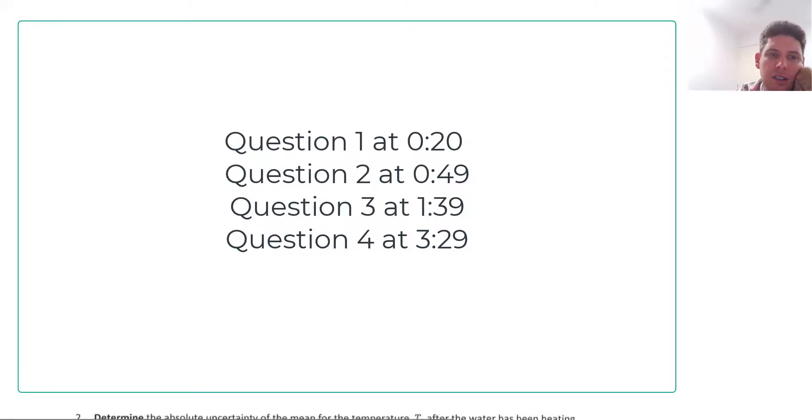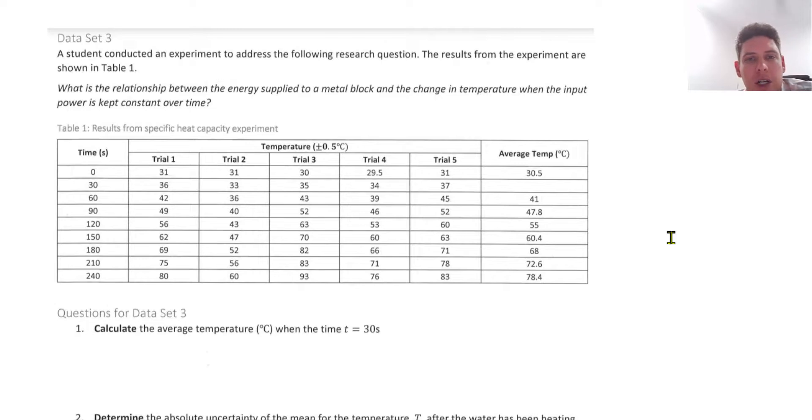Alright, so this is data set 3. A student conducted an experiment to address the research question. The results from the experiment are shown below. What is the relationship between energy supplied to a metal block and the change in temperature when the input power is kept constant over time?